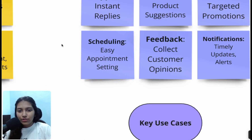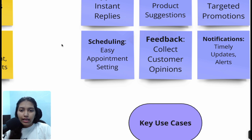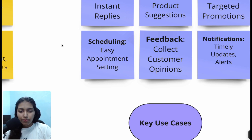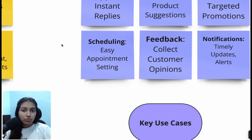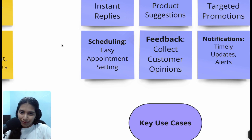Coming to scheduling — this is very handy for businesses that do a lot of appointment setting. There's a lot of back and forth on what time works, but you could have a WhatsApp AI chatbot that queries your calendar, gives available slots, sees which one works for the customer, adds an invite to your calendar, and also sends them an invite.